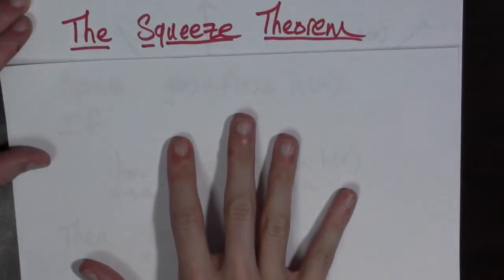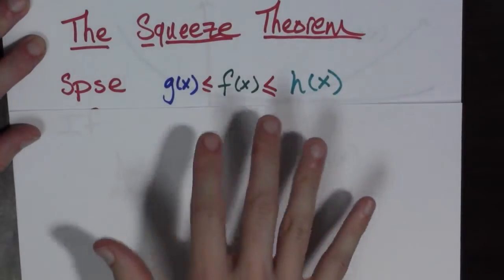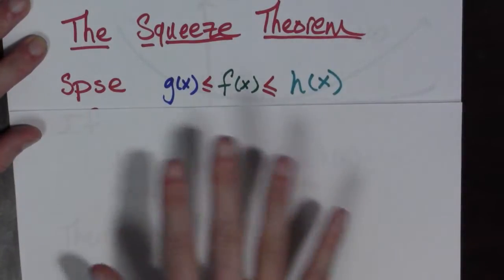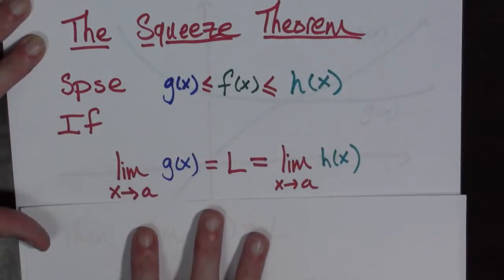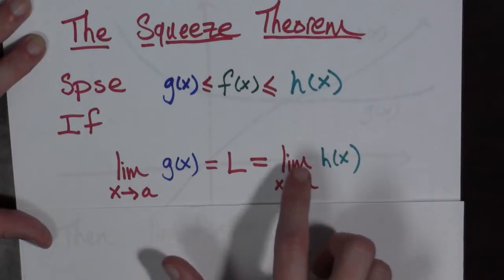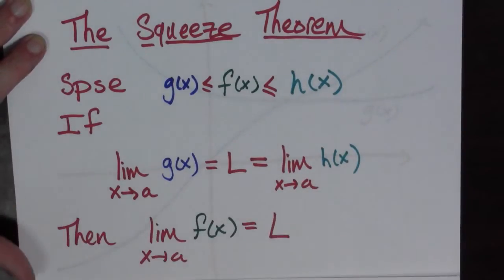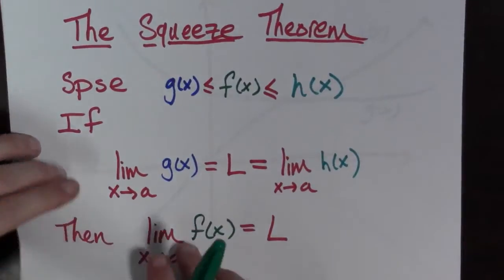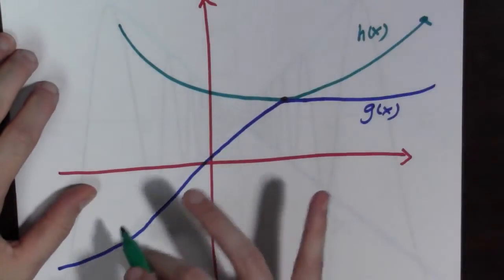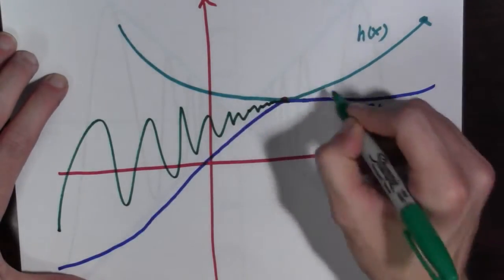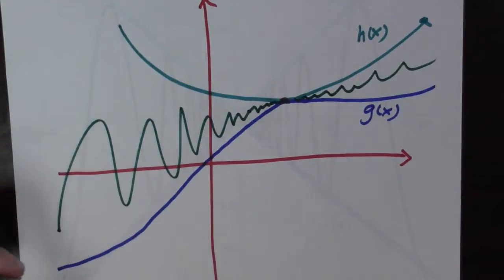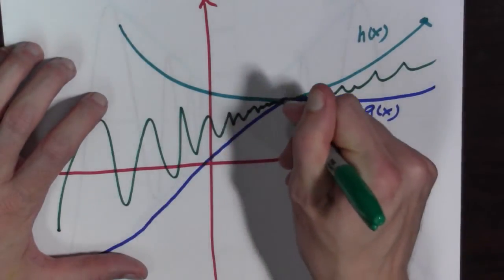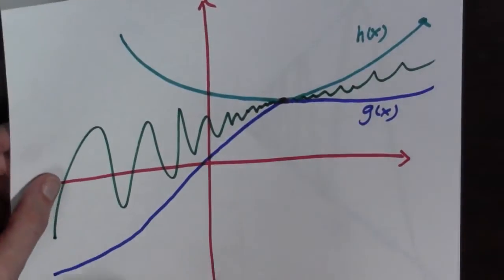Here we'll use the squeeze theorem. We're going to suppose we have three functions: g of x less than or equal to f of x less than or equal to h of x on some interval near a point a. If the limit as x goes to a of g of x equals L, and this equals the limit as x goes to a of h of x, then the limit as x goes to a of f of x equals L. A picture often makes this clear: h of x is above, g of x is below, and our function of interest is some wild function squeezed in between them. The squeeze theorem says if the limits of the bounding functions are equal, the middle function must share that limit.